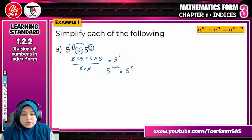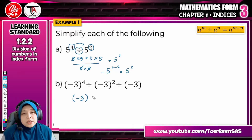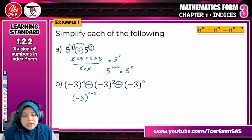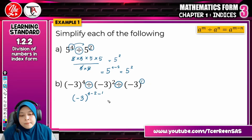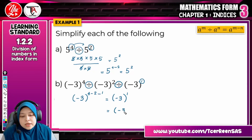Next question. Here we have the same base number. The base is negative 3, so you put it in brackets because it is a negative number. Then, because it is division, you need to minus each of the indices. If there is no number shown as the index, it means it is 1. So the final answer is negative 3 in bracket: 4 minus 2 is 2, and 2 minus 1 is 1. So you just write negative 3 to the power of 1, which is simply negative 3.